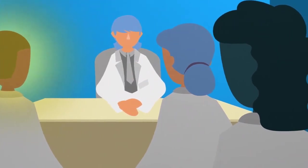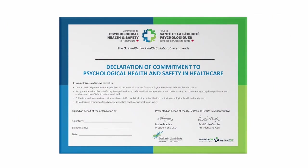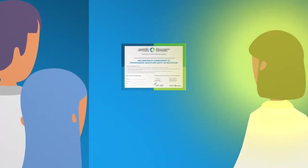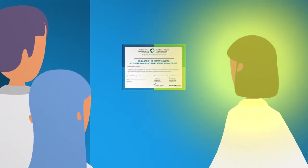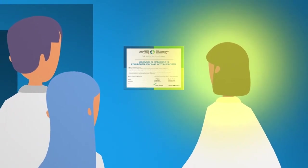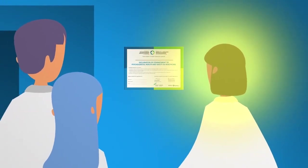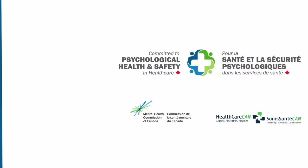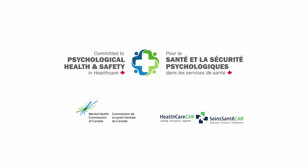Another way to improve psychological health and safety is to announce mental health as a priority. Signing the Declaration of Commitment to Psychological Health and Safety in Healthcare publicly shows your organization's commitment to prioritizing mental health and safety. The Declaration shows your staff and the public that you're dedicated to improving your workplace.